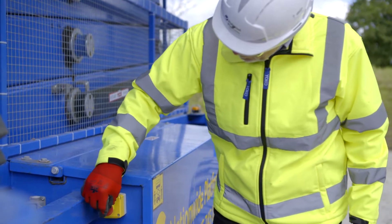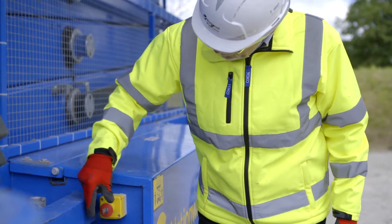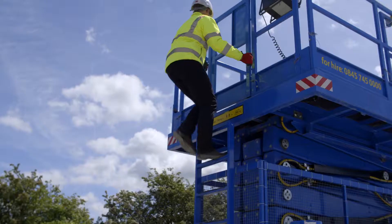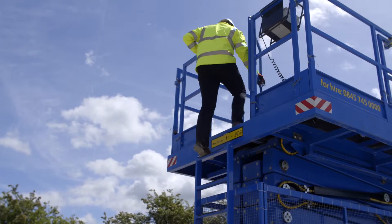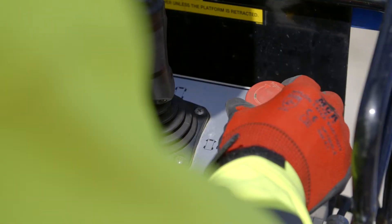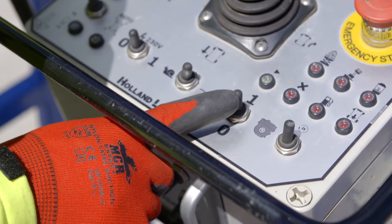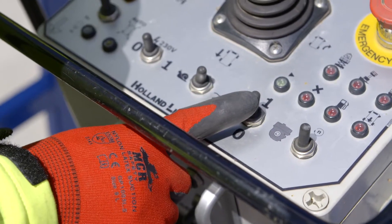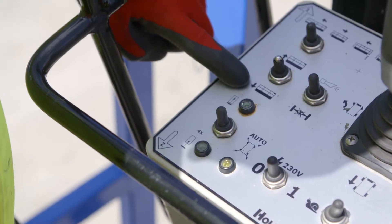To operate the machine from the platform, the lower external emergency stop needs to be pulled out. Enter the platform, pull out the emergency stop, and then hold the starter switch until the engine starts. Once the machine is running, you are now able to operate the desired function.